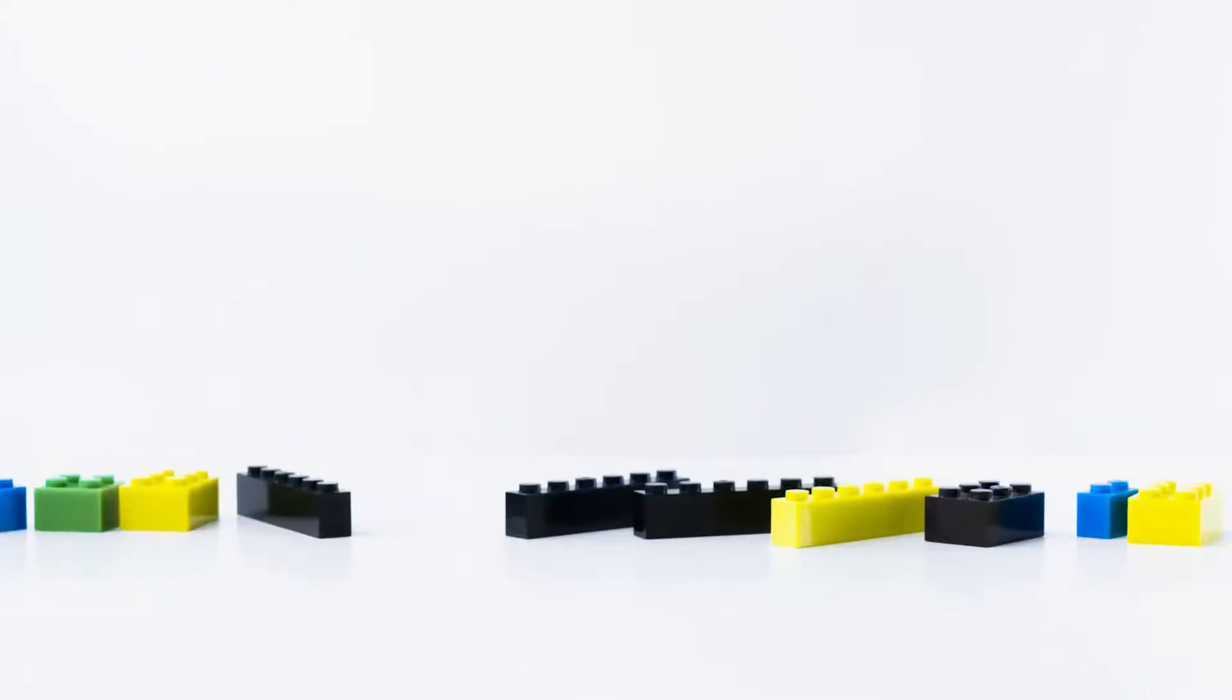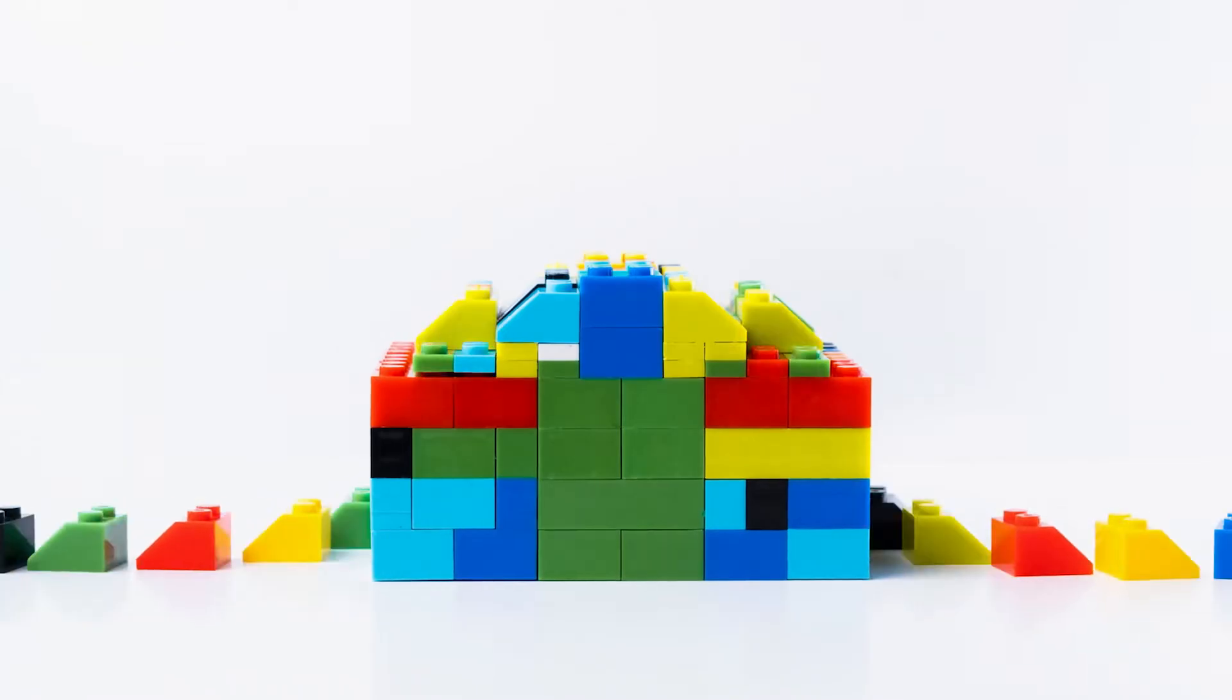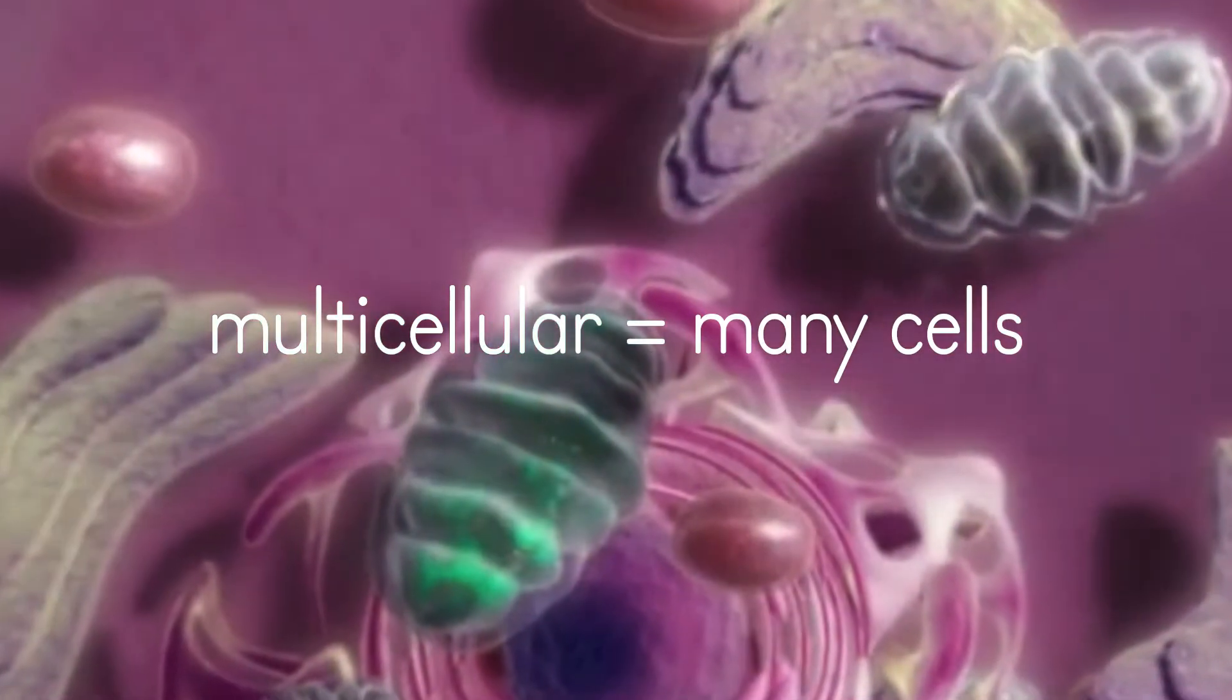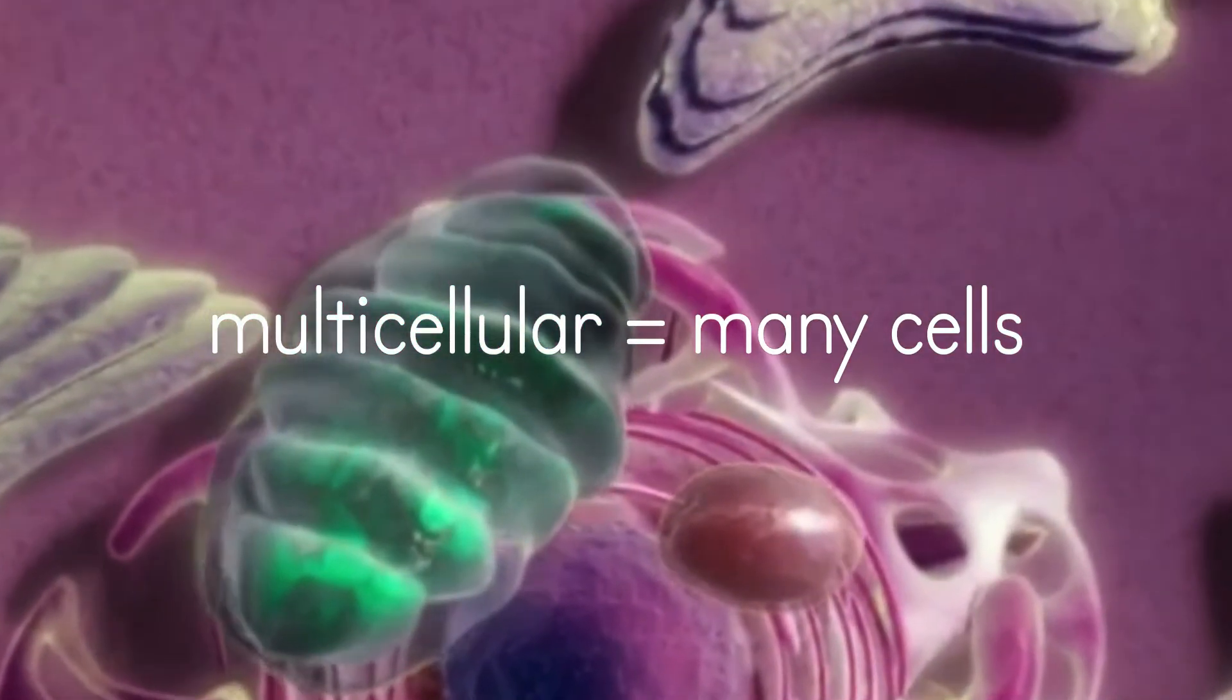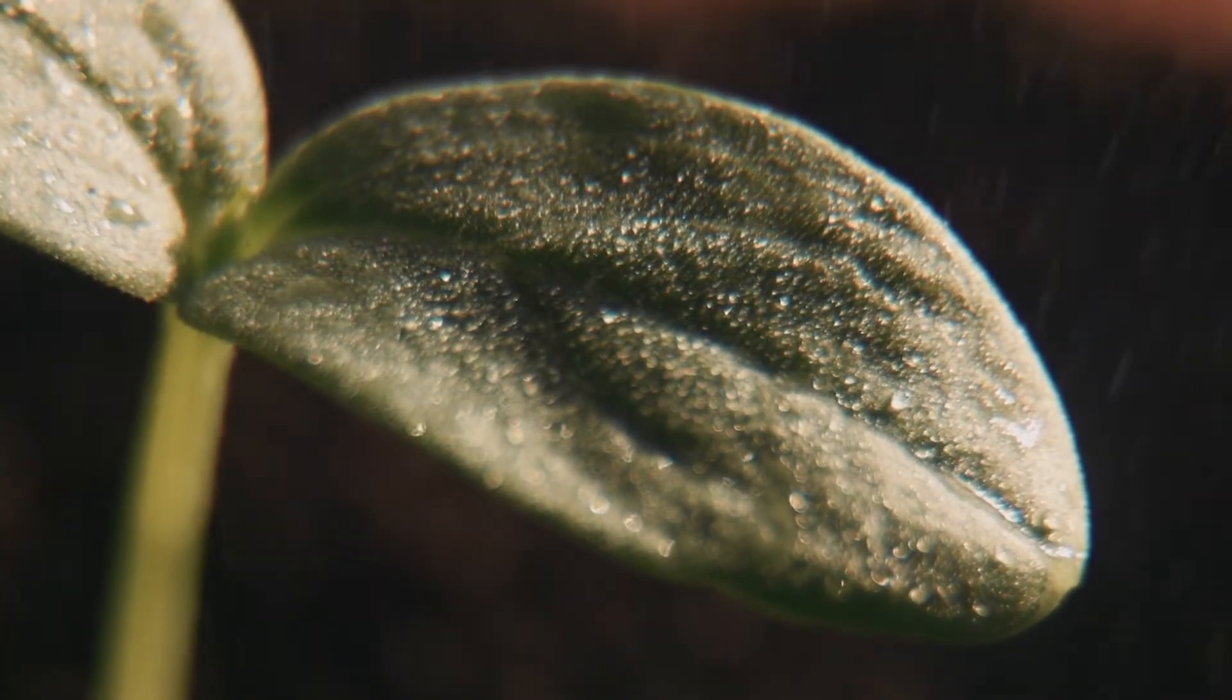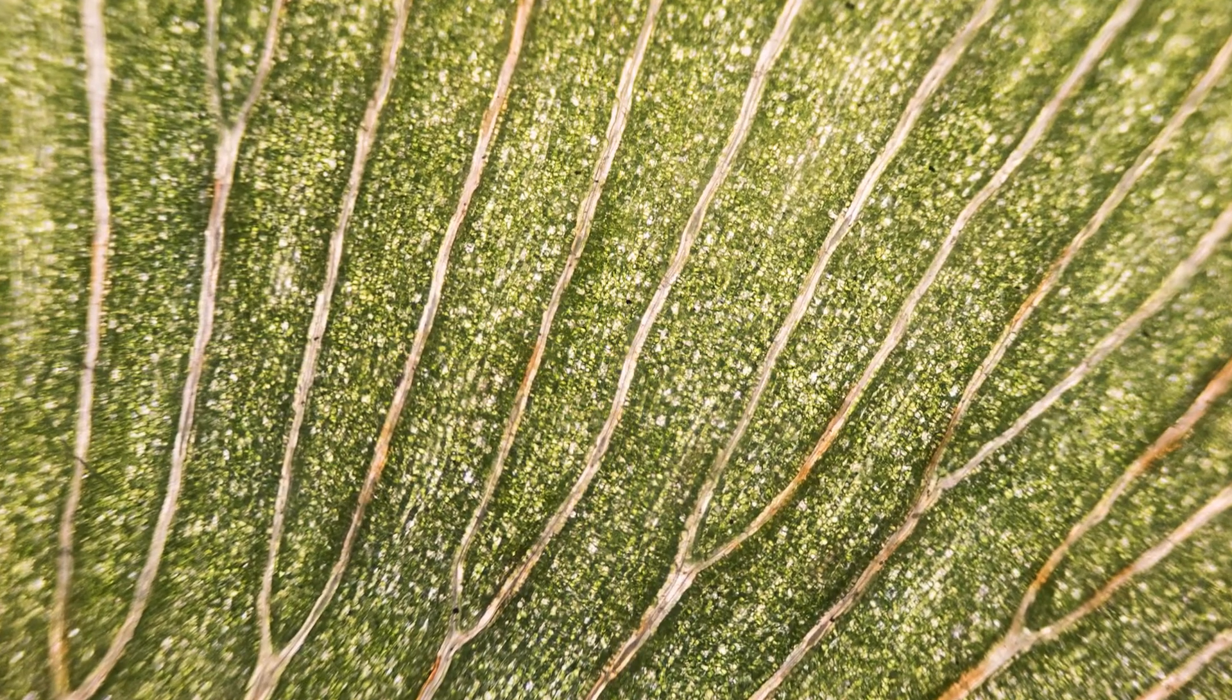Just as you build something bigger out of blocks by snapping them together, cells can also be combined. The resulting multicellular organisms are much larger and more complex than unicellular organisms. Plants and animals are examples of organisms made of many cells working together.